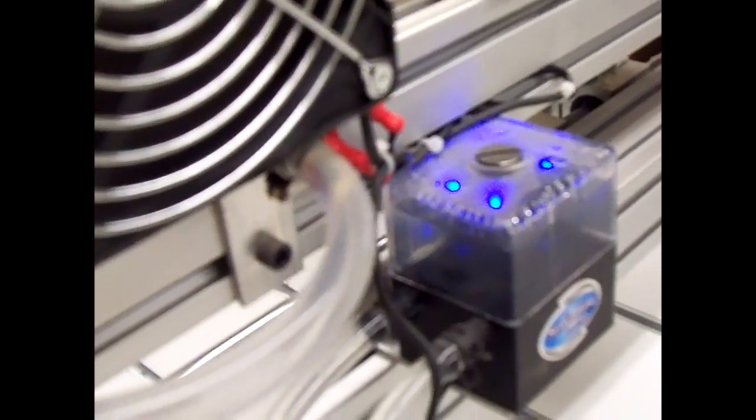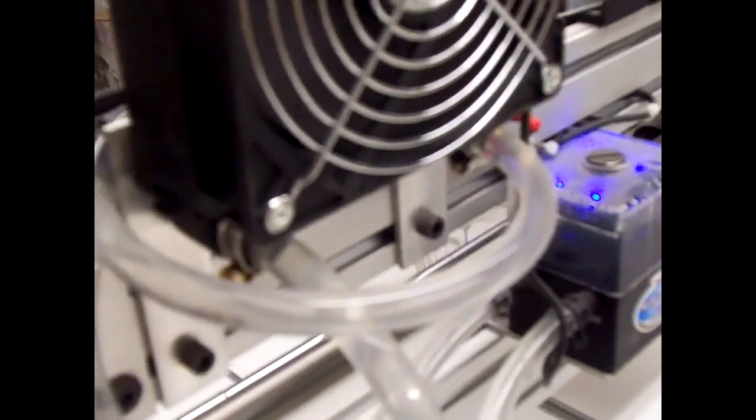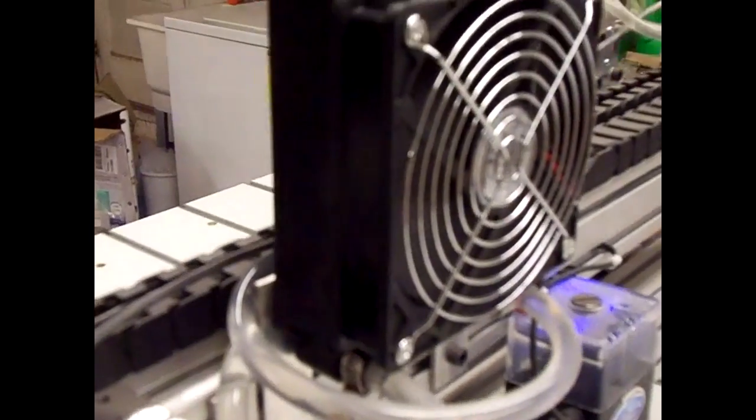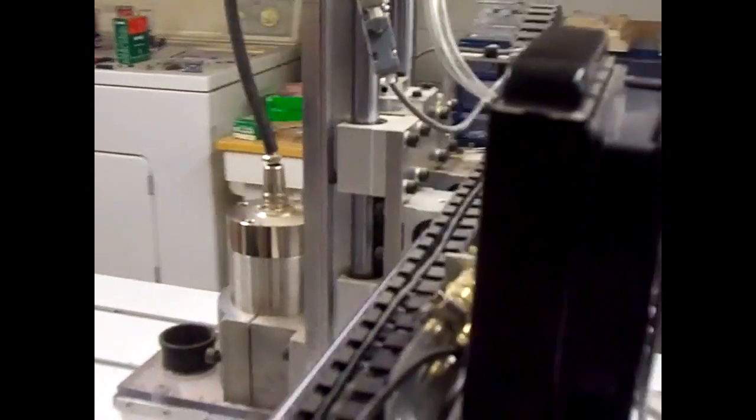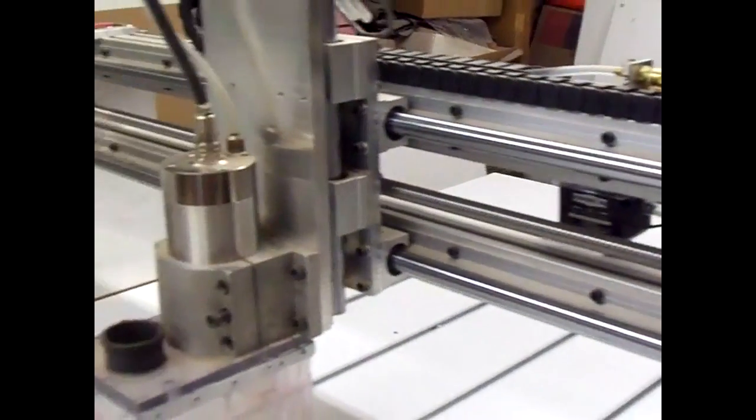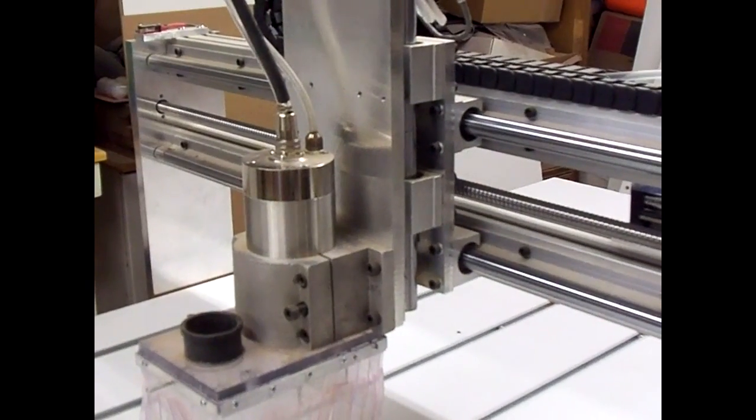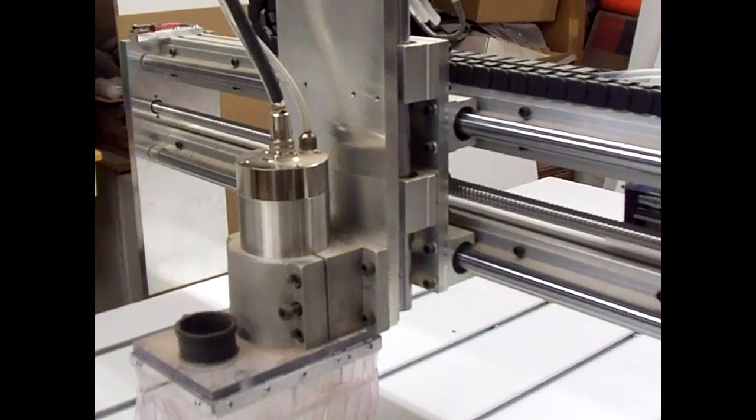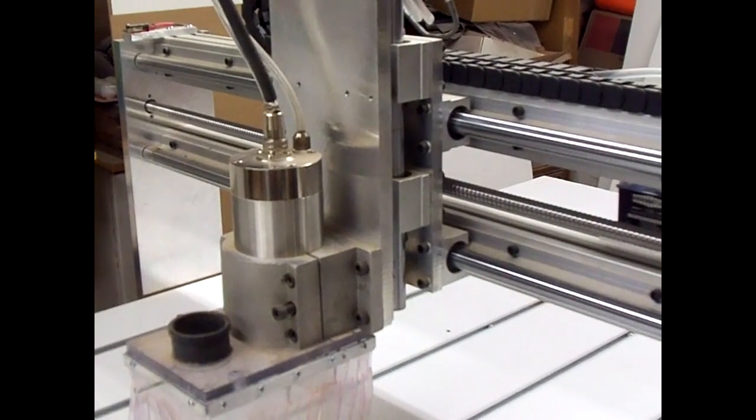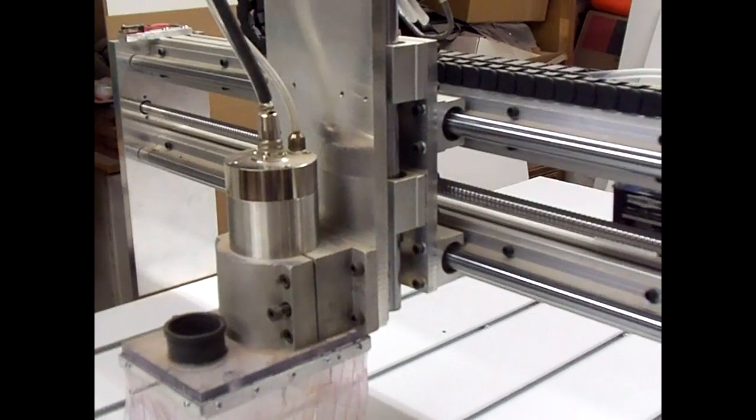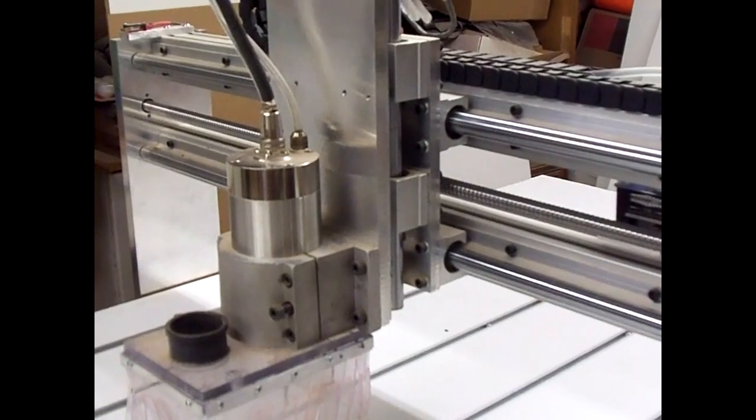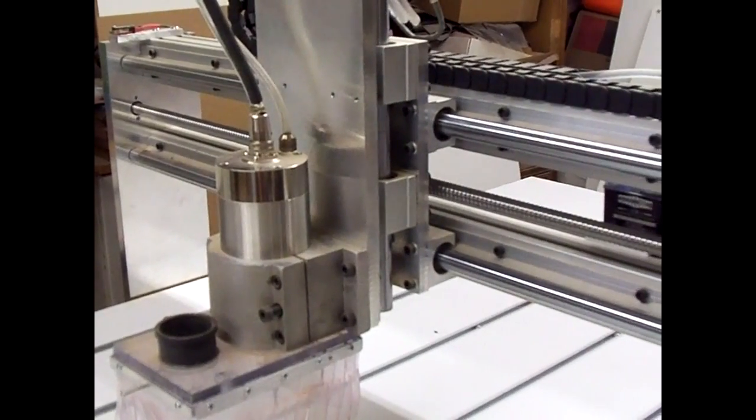You can hardly see it circulating through the tubing, but it's very quiet and it seems to be working pretty good. Before, if you ran the router for more than five minutes it started getting pretty hot. Now it just barely gets warm after, say, 15-20 minutes, so I think it's going to do the trick and be good enough for what I want to do.